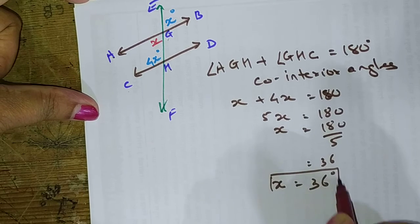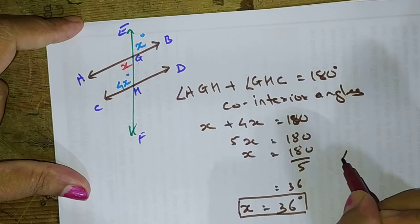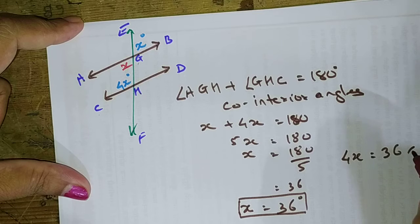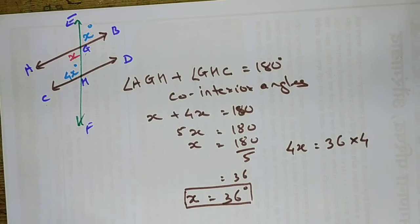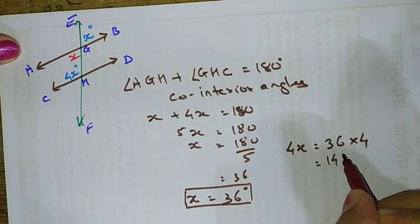If X equals 36 degrees, we can find out the value of 4X also. So 4X should be 36 multiplied by 4. Here you get the value 144.